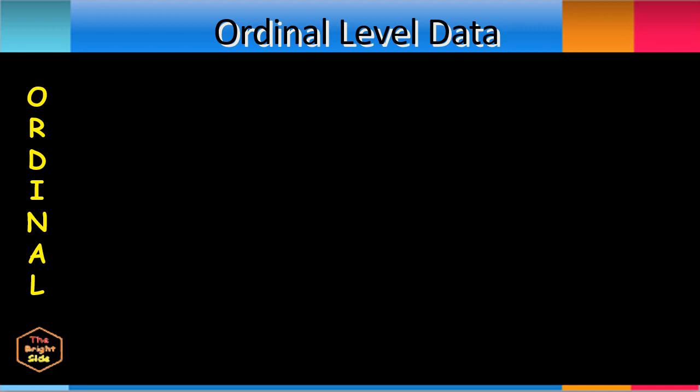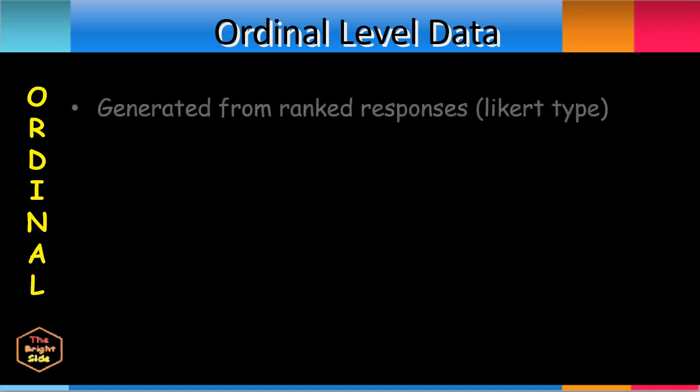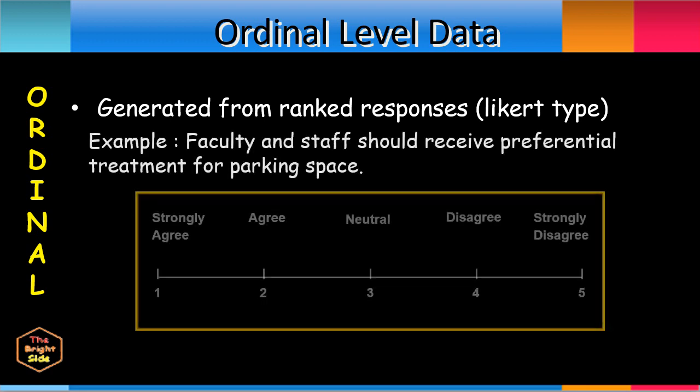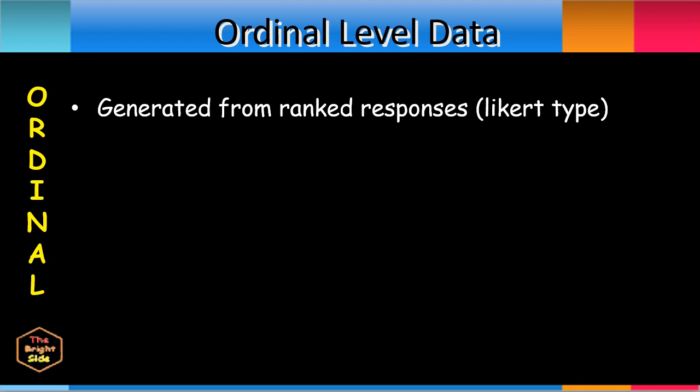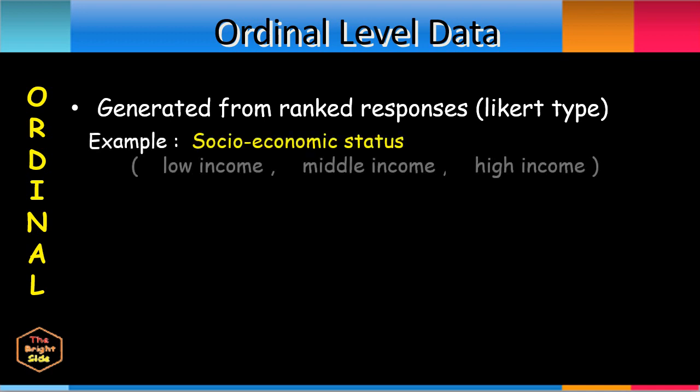A well-known example of ordinal data are those generated from ranked responses in Likert-type survey questions. Notice that the categories within a variable have a natural rank order. However, the distances between the categories are uneven or unknown. Here are some examples of ordinal data from responses to Likert-type questions. For socioeconomic status, data can be low income, middle income, and high income. They may have ordinal level number assignments such as 1, 2, and 3, respectively.